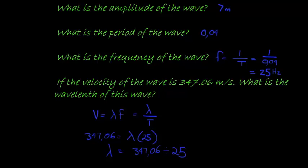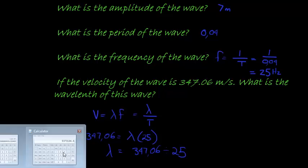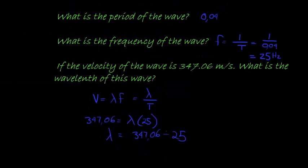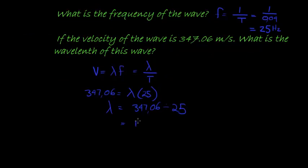So velocity is 347.06 divided by 25 gives me 13.88 meters per second. It's equal to 13.88, not meters per second, meters. Lambda is the wavelength, so that is how long it is. And it's 13.88 meters.